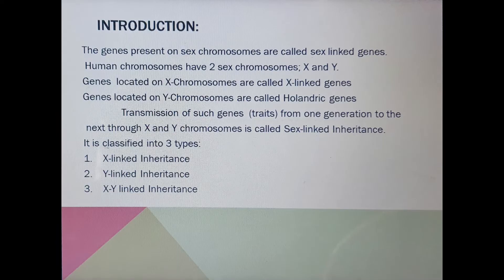We have already seen what is inheritance. Inheritance is the transfer of characters or genetic information from parents to their offspring, or one generation to the next generation. Similarly, sex linked inheritance is the transfer of sex linked characters from parents to their offspring. In humans there are 23 pairs of chromosomes, out of which 22 pairs are autosomes and one pair is sex chromosomes.